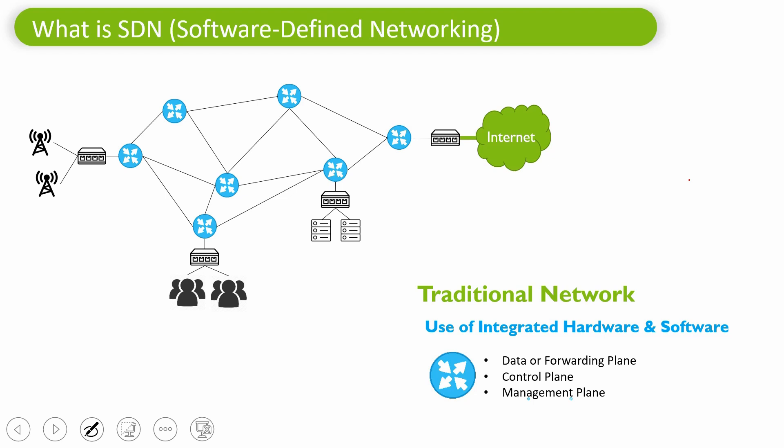In a traditional network, traffic moves between various switches and routers to reach the final destination. SDN changes how networking is fundamentally done. Instead of having network intelligence distributed in every device — every router and switch applying its own brain — SDN aims to centralize the command and control into a central node and distribute the functions into a separate control plane and a separate data forwarding plane.